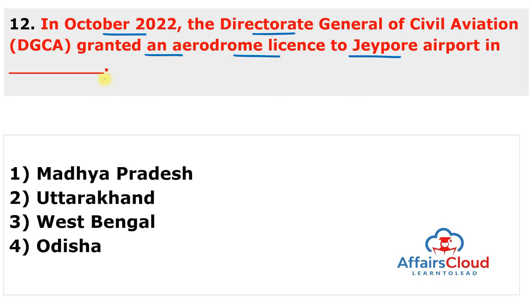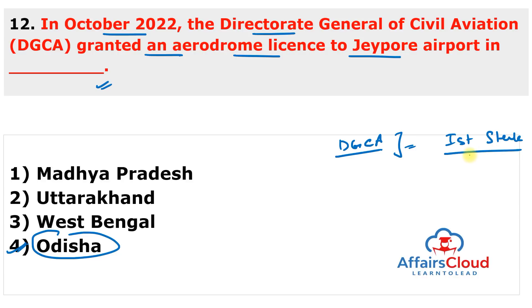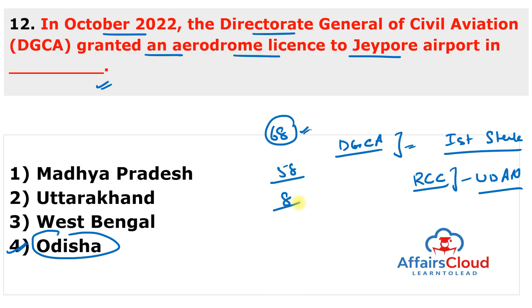Next question: in October 2022, the DGCA granted an aerodrome license to Jaipur Airport in which state? Jaipur Airport is situated in Odisha. The Directorate General of Civil Aviation (DGCA) granted an aerodrome license to Jaipur Airport in Odisha. Jaipur Airport became the first state-owned airport to get the license to carry out commercial flight operations under the regional connectivity scheme UDAN (Ude Desh Ka Aam Naagrik). Under UDAN, 68 underserved or unserved destinations — including 58 airports, 8 heliports, and 2 water aerodromes — have been connected.